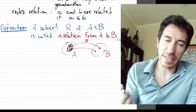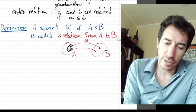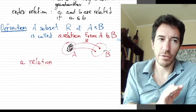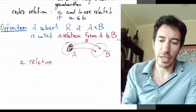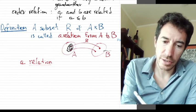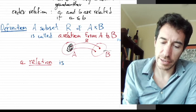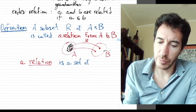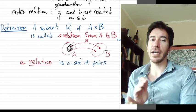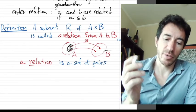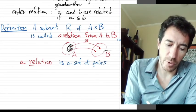But I want to define something a bit more general. A relation, if we only say a relation and we don't say from where to where, is just a set of pairs. So we're being very loose. Whenever you have a set of pairs, we call that a relation.